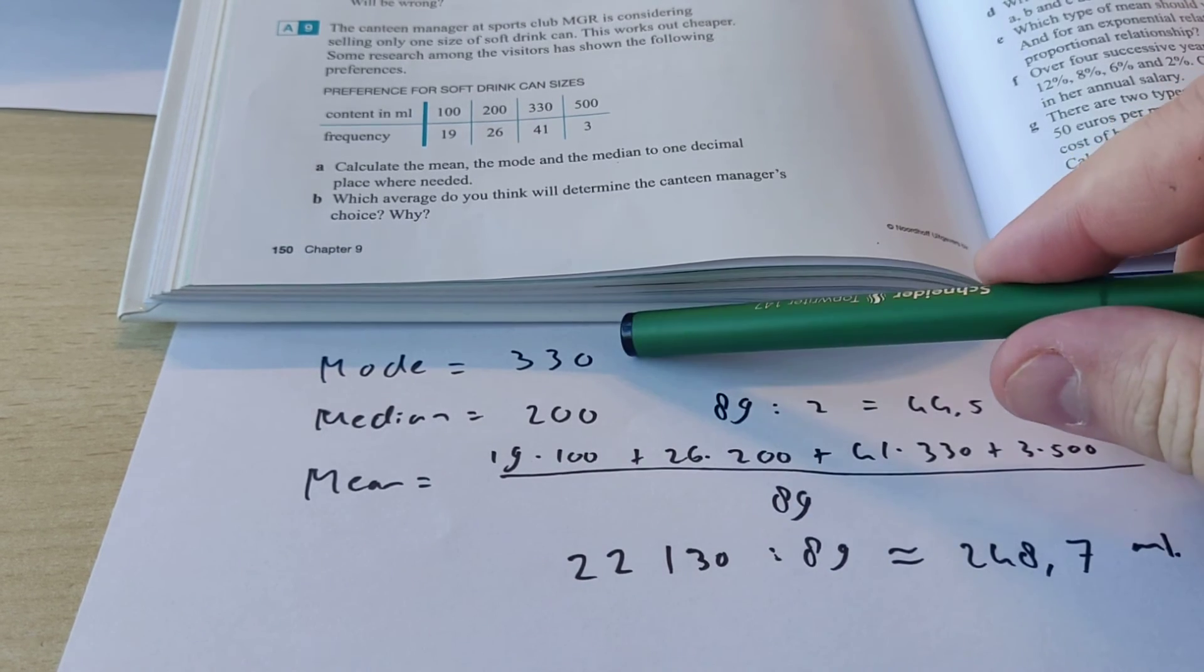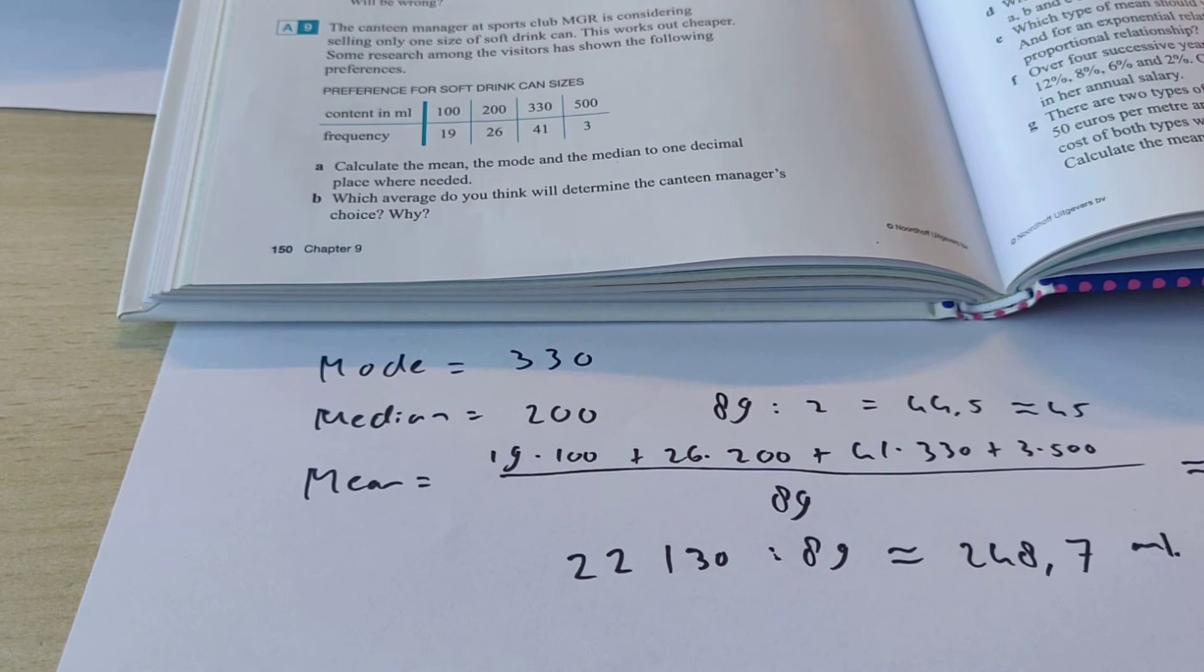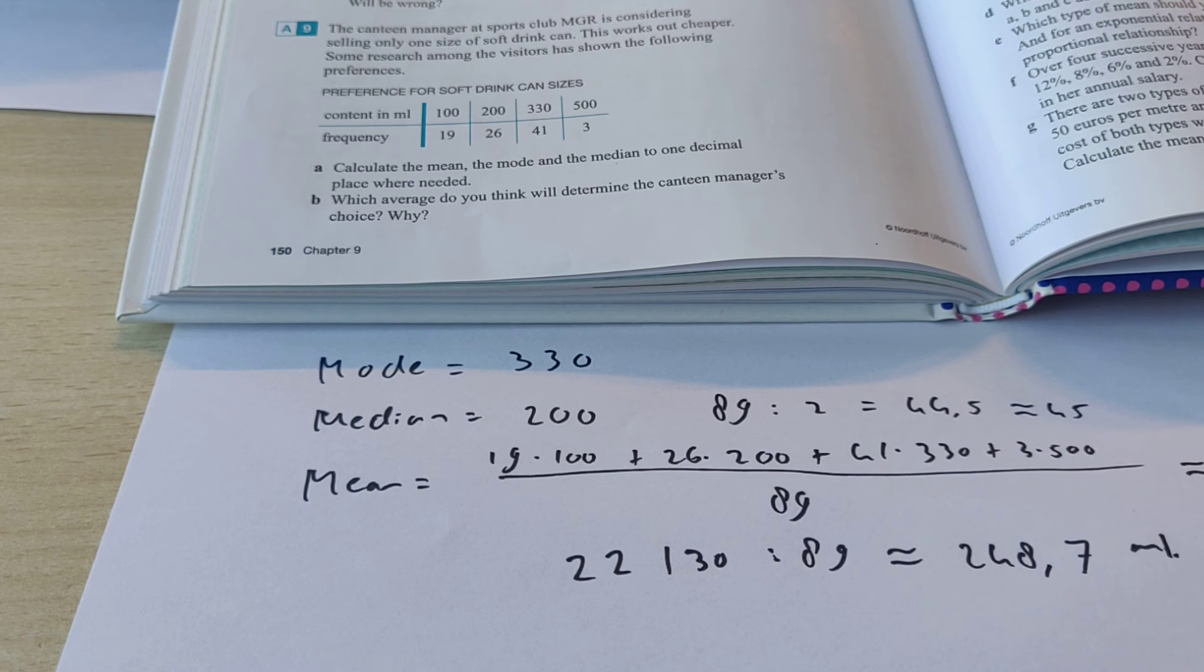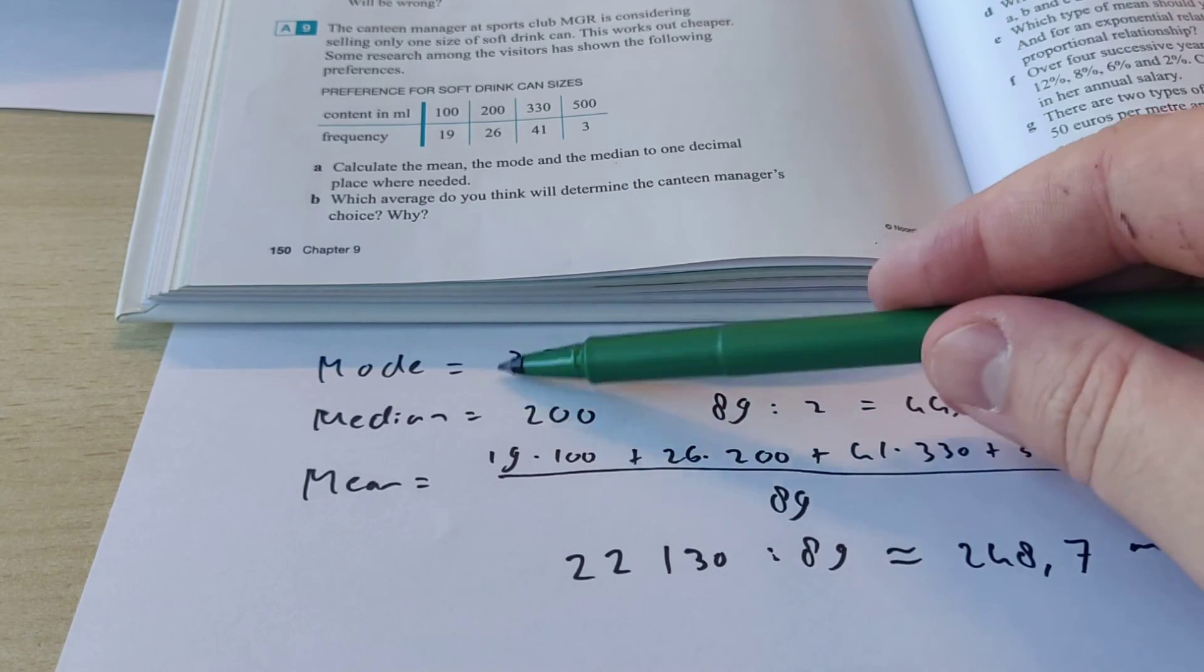So, is the canteen manager going to choose the mode? Is he going to choose the median? Or is he going to choose the mean? Okay. Well, first of all, the mean, there is no can that has this. So, there's no point in choosing that, right? The median is the one in the middle.